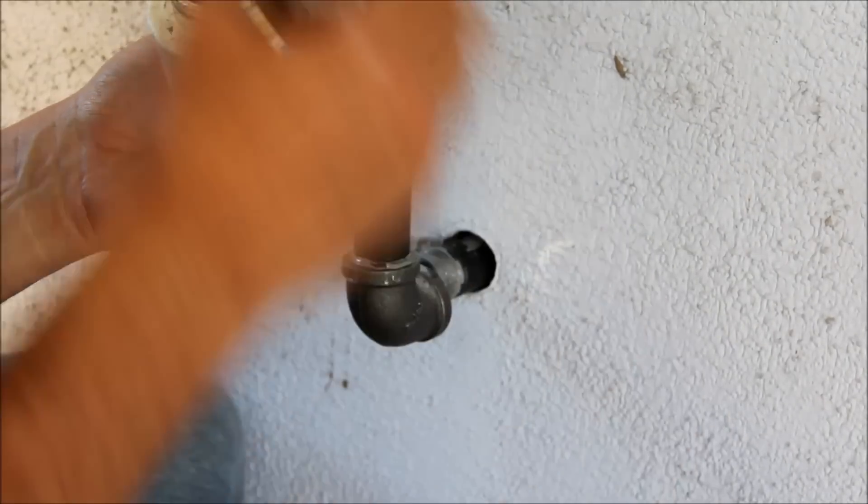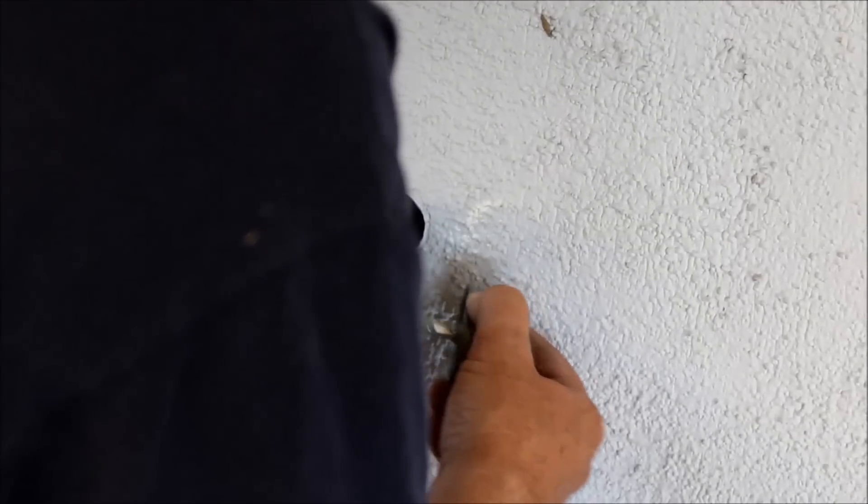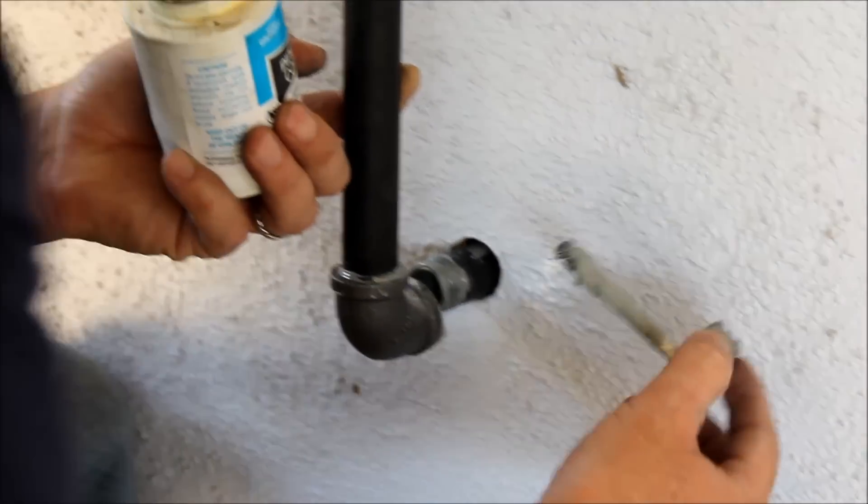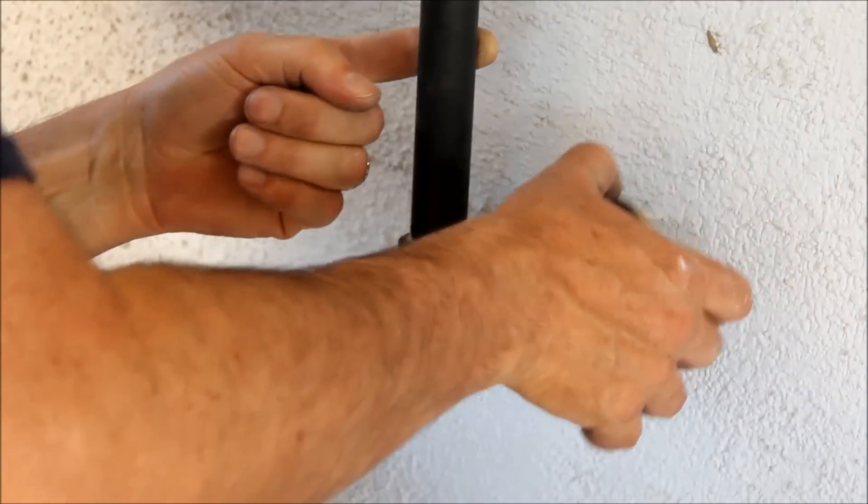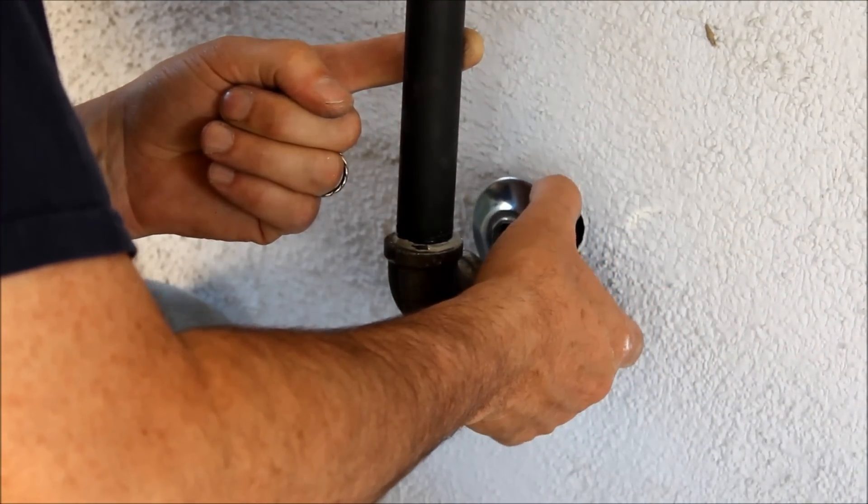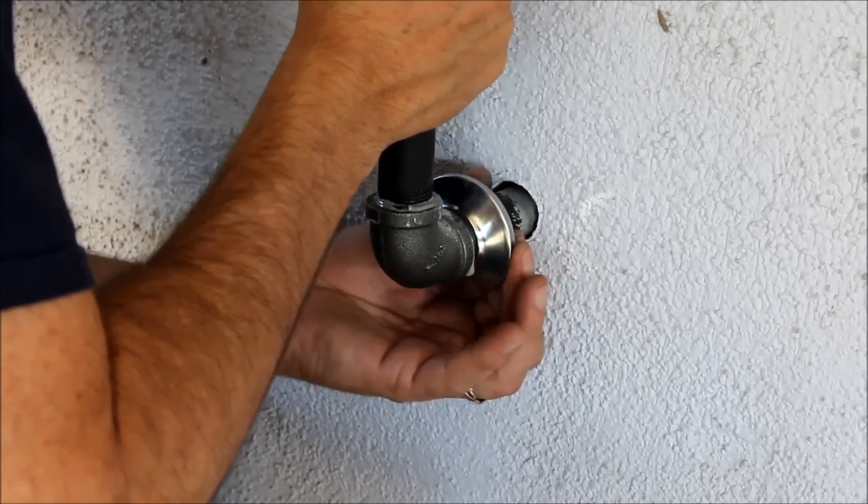I'm putting pipe compound around the threads here on the male side and also I put it on the female side here too. Then I put the cover over the pipe. So I screw this into the pipe.